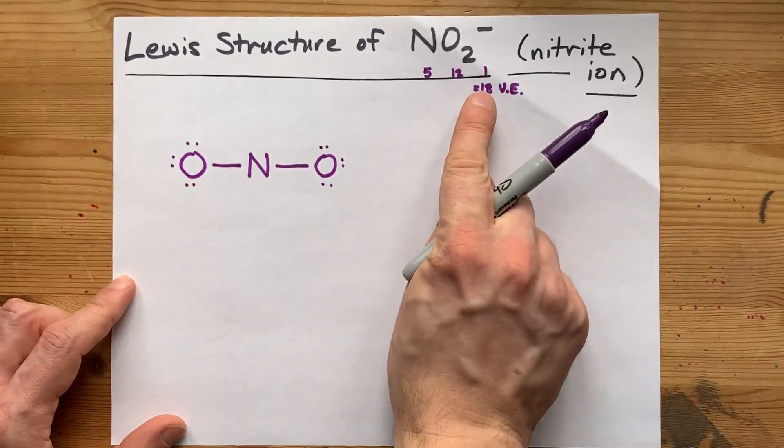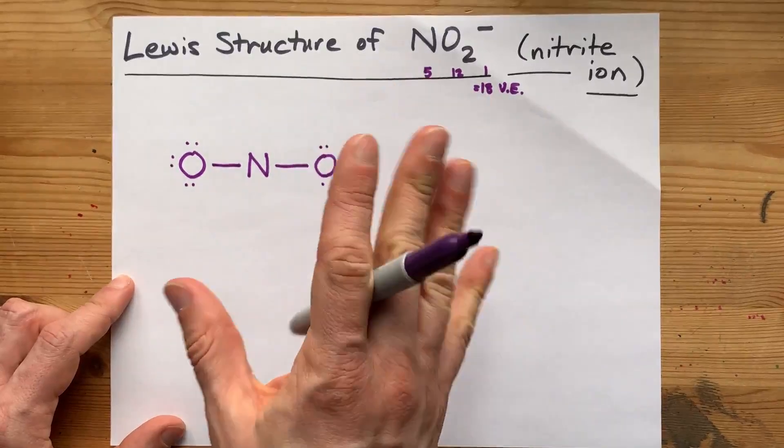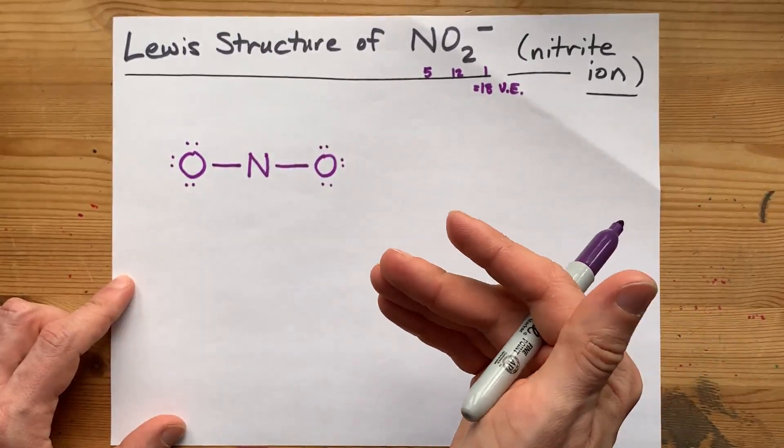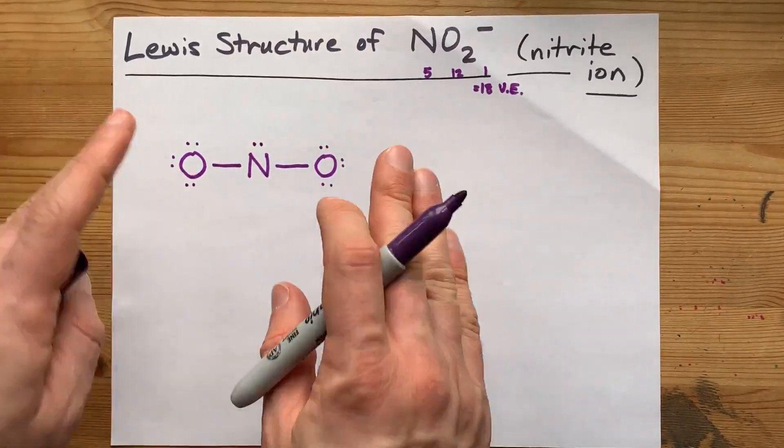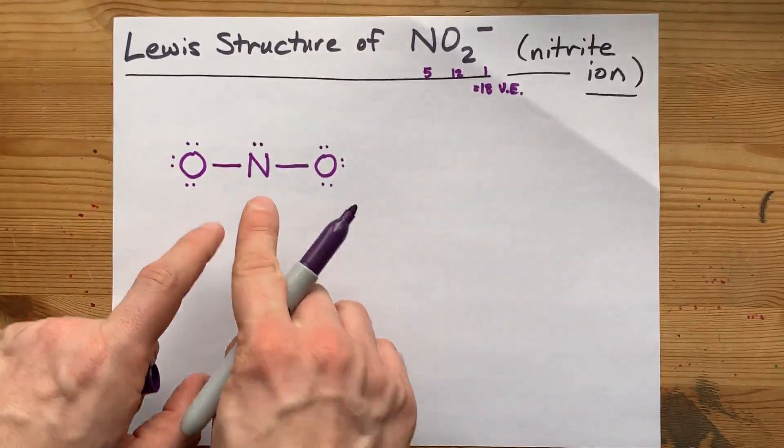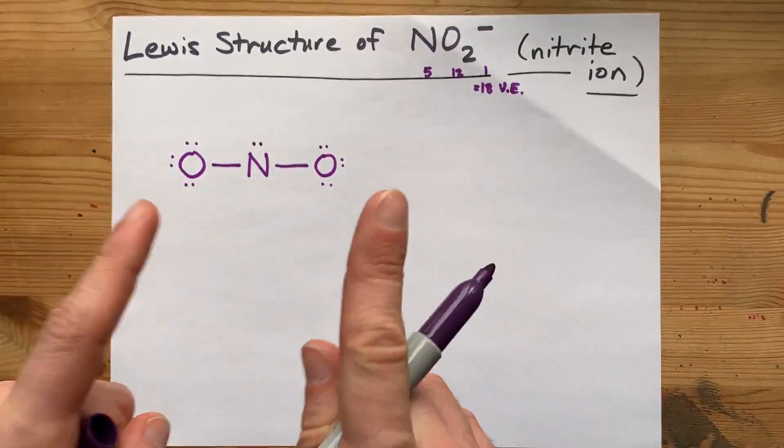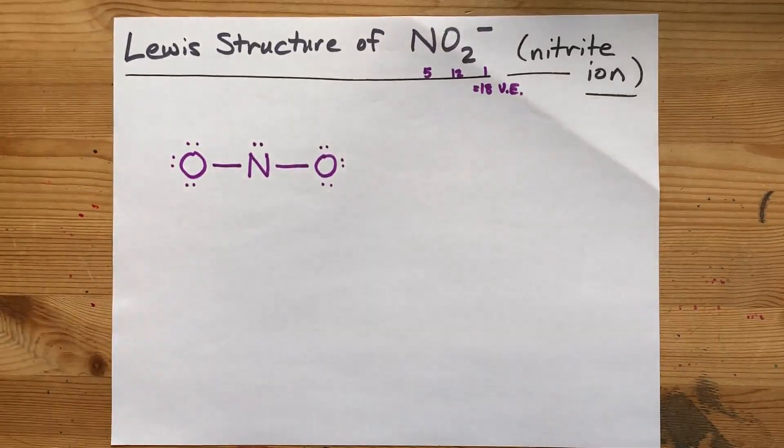But I need eighteen. And where do I put the extra electrons at that point? If there are any, I dump them on the central atom. So I'm close, but nitrogen, the central atom here, does not yet have a full octet.